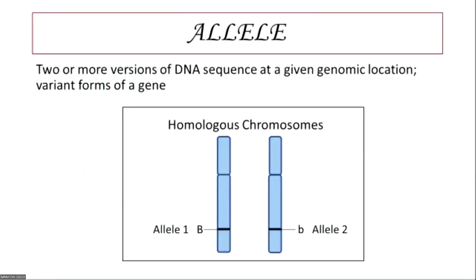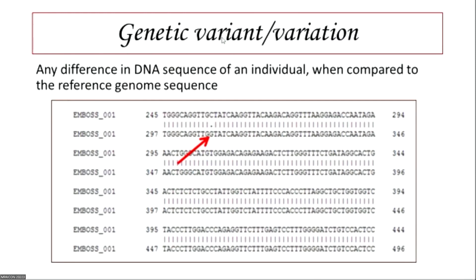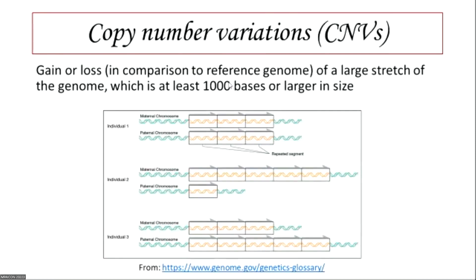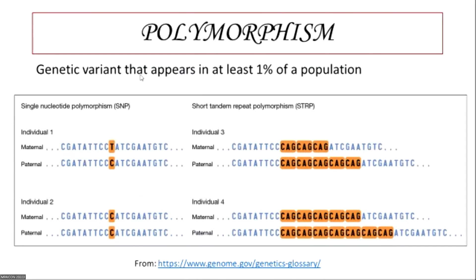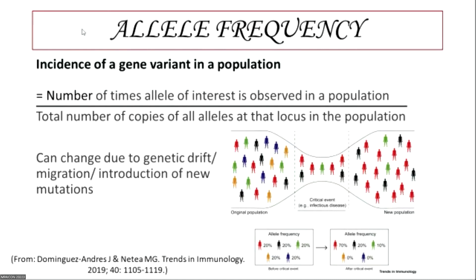To understand the databases, we need to understand a few definitions. An allele is defined as two or more versions of the DNA sequence at a genomic location. Genetic variation or variant is any difference in the DNA sequence compared to the reference genome. Copy number variation is a difference in copy numbers which are more than 1,000 base pairs in size. Polymorphism refers to a variation present in more than 1% of a population, which we usually consider as benign with some caveats. The key number we get from these databases is the allele frequency, which is the incidence of a gene variant in a population, calculated as the number of times the allele of interest is observed divided by the total number of copies of alleles at that locus.